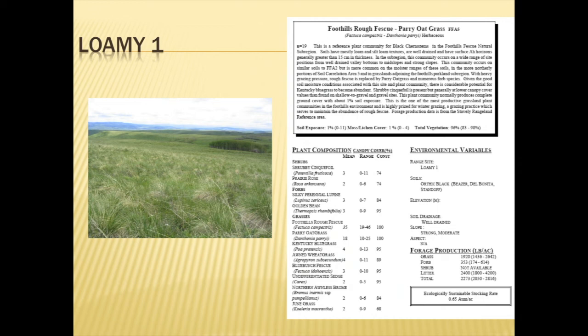The range plant community description includes a narrative at the top that captures what we know from the published science as well as some tacit knowledge. We'll have a measure of the robustness of the plant community based on the sample size — this one is based on 19 samples, so that's probably a pretty robust community. In the lower left quadrant, we have species cover information describing the range of species and cover types and constancy, and then environmental variables on the right that help us understand where we find this in the landscape.